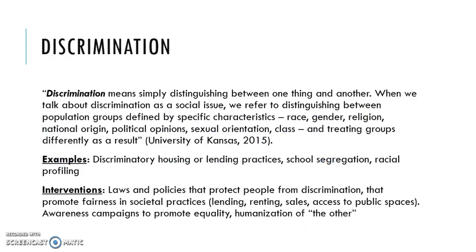Discrimination. The readings emphasize a definition that goes beyond simply distinguishing between things, to refer to distinguishing between social groups based on characteristics and treating them differently as a result. Some examples include discriminatory lending practices, housing practices, the historical practice of redlining, and excluding people based on race or socioeconomic status. We also see school segregation and racial profiling. Social work interventions that work against discriminatory practices include laws and policies that protect people, promote fairness in lending, renting, sales, and access to public spaces, as well as awareness campaigns to promote equality and the humanization of those defined as different.